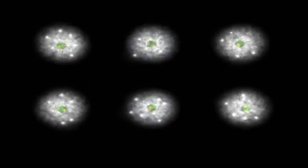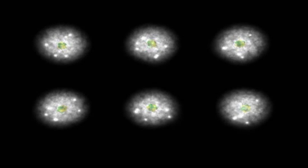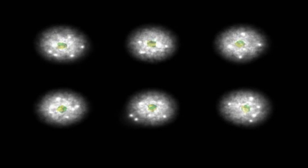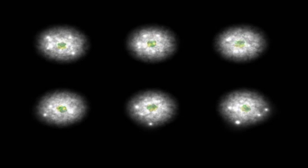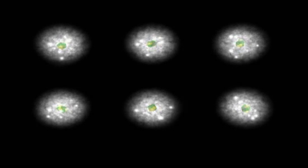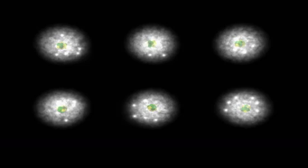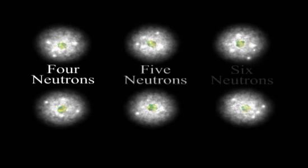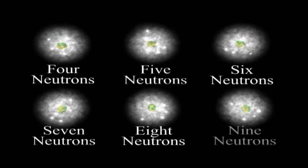While every atom of a given element has the same number of protons, the number of neutrons contained in the nucleus of atoms of the same element can vary. For example, carbon atoms can have 4, 5, 6, 7, 8, or 9 neutrons.